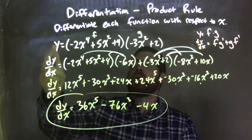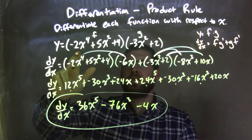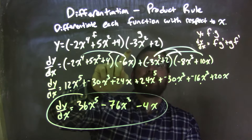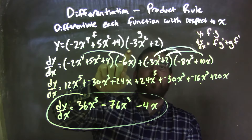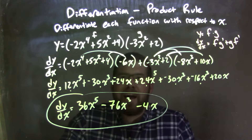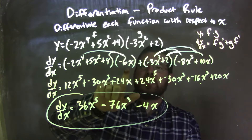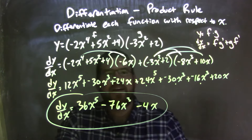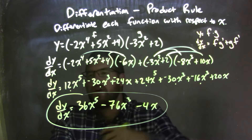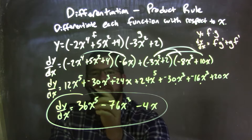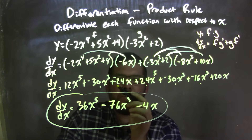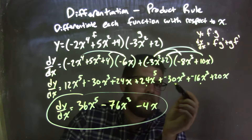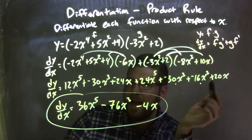So let's recap. We were given our function y equals, in parentheses, negative 2x to the 4th plus 5x squared plus 4, which I labeled as function f, times the second one, negative 3x squared plus 2, which I labeled as g. I then applied the product rule, which was f times g prime plus g times f prime. Then I had to distribute, giving me: dy/dx equals 12x to the 5th plus negative 30x to the 3rd plus negative 24x, plus 24x to the 5th plus negative 30x to the 3rd plus negative 16x to the 3rd plus 20x.